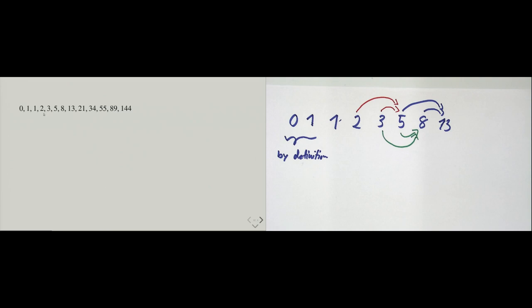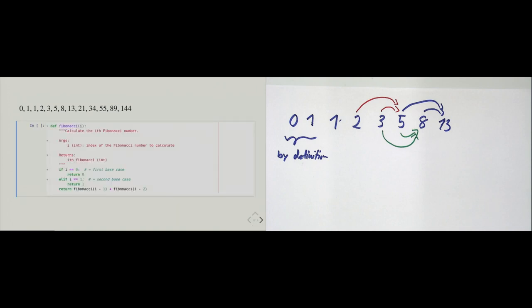Here we see the Fibonacci numbers going further until 144. 144 will be the 13th Fibonacci number and will have an index of 12. I index them the same way as Python: the first Fibonacci number has index 0, the second has index 1, and 144 has index 12. Just to make sure you don't make any off-by-one errors here.